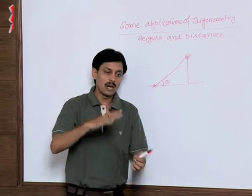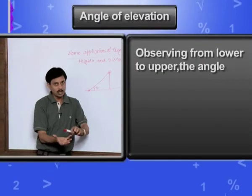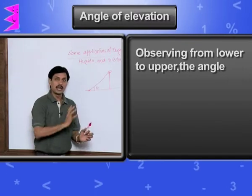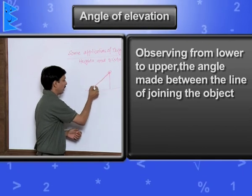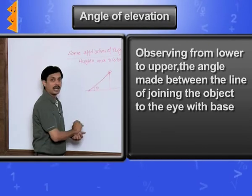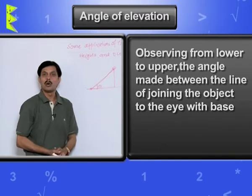When you are observing any object from lower to upper, that angle between the line joining that object to eye with the base is known as the angle of elevation.